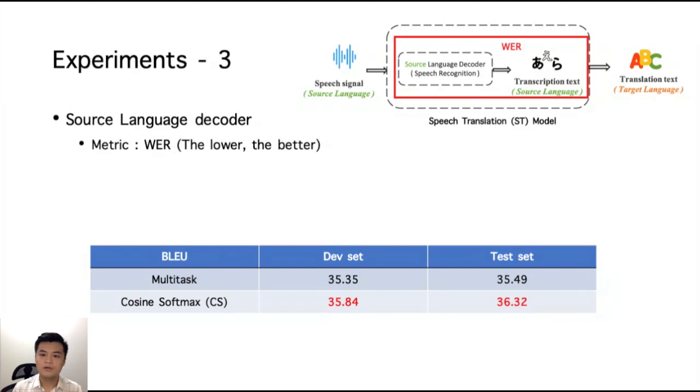We further observe the word error rate of the source language decoder. The table shows the BLEU score of the multi-task ST and cosine softmax method. The scores are the same as the previous slide.